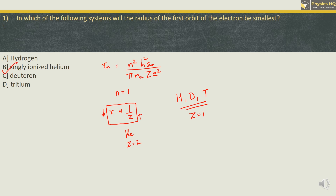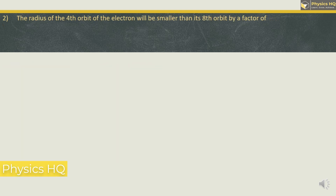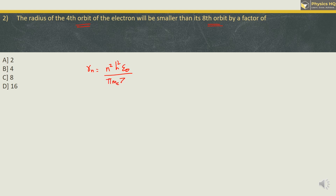Let us go ahead to the next MCQ. The radius of the fourth orbit of the electron will be smaller than its 8th orbit by a factor of: 2, 4, 8, or 16. For this, let us write down the formula for radius of the nth orbit, given by n² h² ε₀ divided by π × m × e² × Z. From this we can see that the radius of the nth orbit is directly proportional to n².